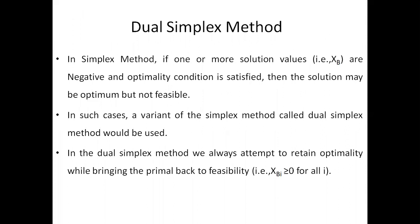In the simplex method, if one or more solution values, i.e. XB values, are negative and the optimality condition is satisfied, then the solution may be optimum but not feasible. In such cases, a variant of the simplex method called the dual simplex method would be used. In the dual simplex method, we always attempt to retain optimality while bringing the primal back to feasibility, that is XBi greater than or equal to 0 for all i.